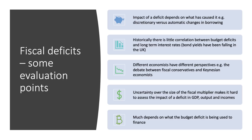The fourth evaluation point is that there's a lot of uncertainty over the size of the fiscal multiplier — for example, if the government borrows an extra £10 billion, how big would the impact be on GDP, incomes, and jobs? We don't really know. Crucially, much depends on what the budget deficit is being used to finance — there could be a difference between a deficit covering increased local authority spending versus one funding significant capital investment in health or education.